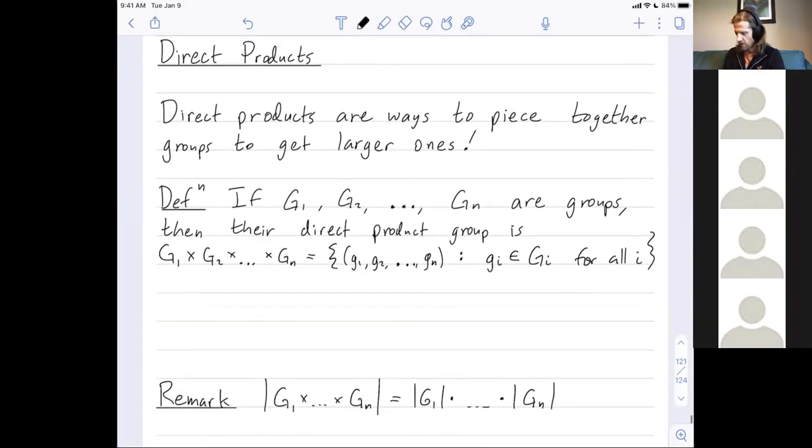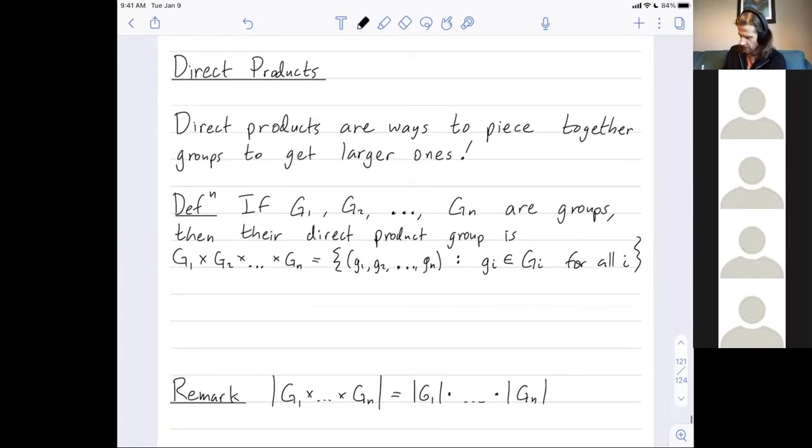Maybe let me make this more explicit. What's the size of Z mod 2Z cross Z mod 3Z? It's the size of Z mod 2Z, which is two, times the size of Z mod 3Z, which is three. So, six.